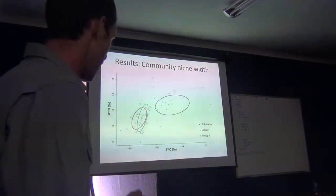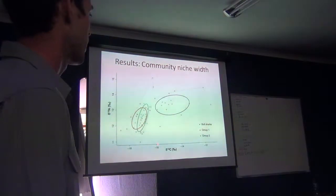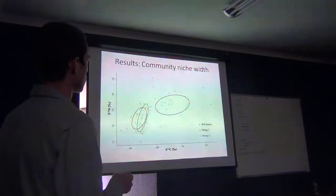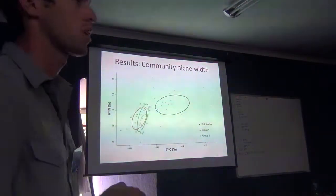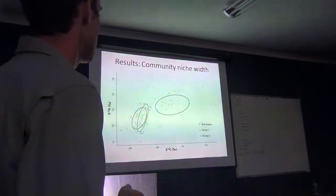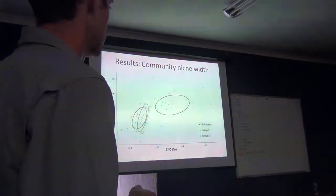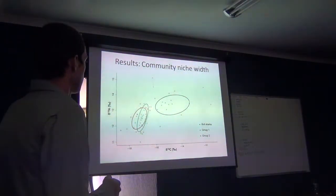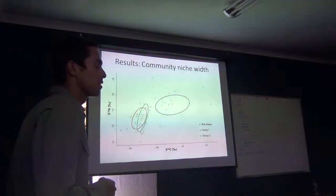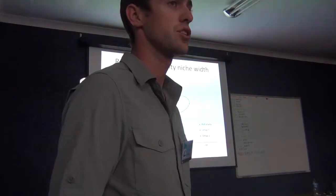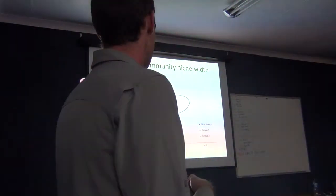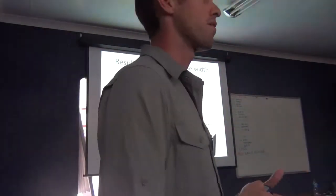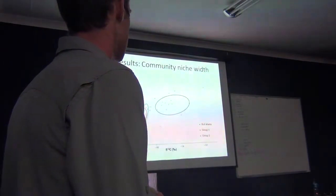Nitrogen is on the y-axis and carbon on the x-axis, giving us the idea of trophic position and dietary source respectively. We use Bayesian ellipses, which correct for small sample size and differences between sample sizes, allowing us to compare niche widths between our bull sharks — shown as the black lines — and our two predatory fish communities. Essentially, this suggests that the coastal and pelagic teleost predatory communities have a highly overlapping dietary range, backed up by our observations: species from offshore and inshore components don't have much dietary partitioning, sharing two overlapping niche spaces.